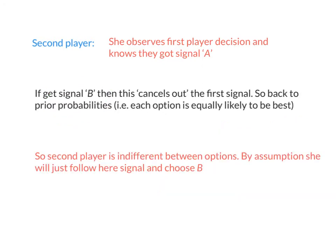But what if the second player gets signal B? Now that second player knows that player 1 got signal A, but her own signal is B. So there have been two draws — one A, one B — and they cancel each other out. Clearly one signal is wrong, but the second player doesn't know which one. So the second player is back to the prior probabilities: a 50% chance that A is best and a 50% chance that B is best. That's where our assumption comes in — the second player is indifferent, so she follows her own signal and chooses B.